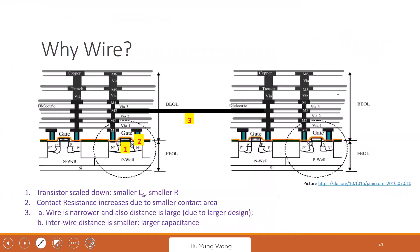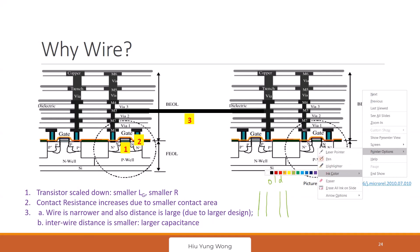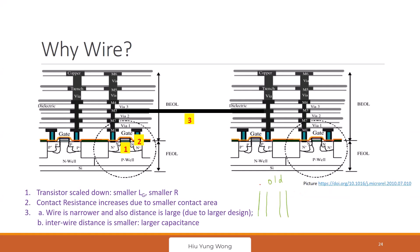The problem is that transistors are getting smaller — smaller length, smaller R — but contact resistance increases because of smaller area. At the same time, wires can be longer because designs are larger, or the spacing is smaller making it denser. So capacitance is getting larger because wires are closer.